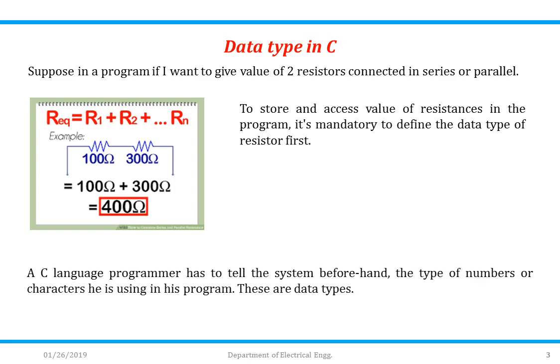A C language programmer has to tell the system beforehand the type of numbers or characters he is using in his program. These are the data types.